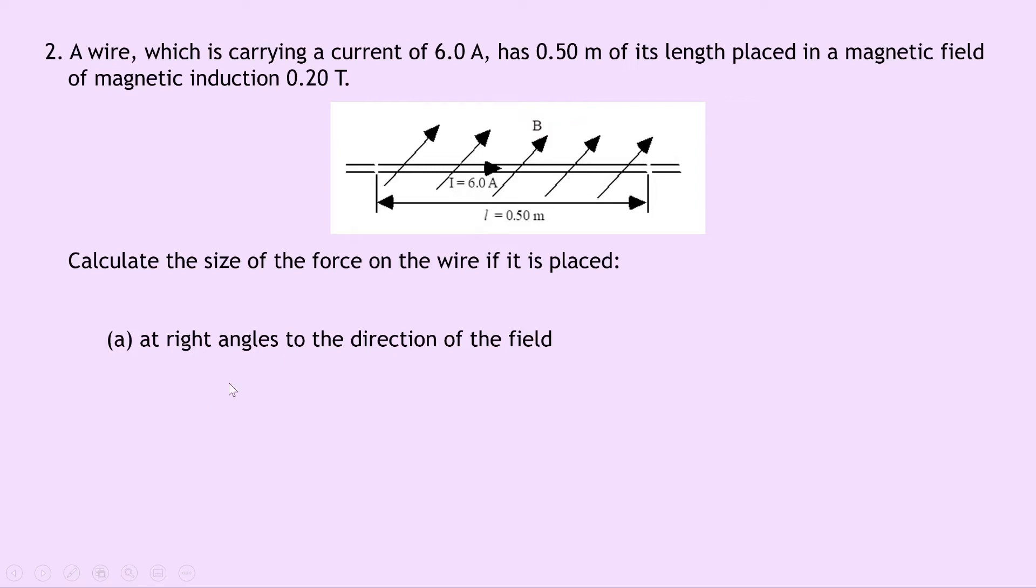We can start by writing down what we know from the question so we're trying to find F. We know that I is 6 amps. We know the length of the wire L is 0.5 metres and the magnetic induction B is 0.2 tesla. We also know that if it's at right angles then the angle theta must be 90 degrees. So writing down the equation we have F equals ILB sin theta which is equal to 6 times 0.5 times 0.2 times sin 90 and if you put that into your calculator you should get an answer of 0.6 newtons.